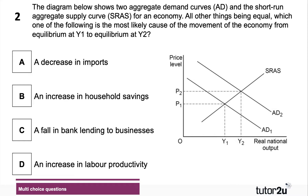All other things being equal — ceteris paribus — which one of the following is the most likely cause of the movement of the economy from equilibrium Y1 to equilibrium Y2? Take a moment, press the pause button, and have a go at question two.